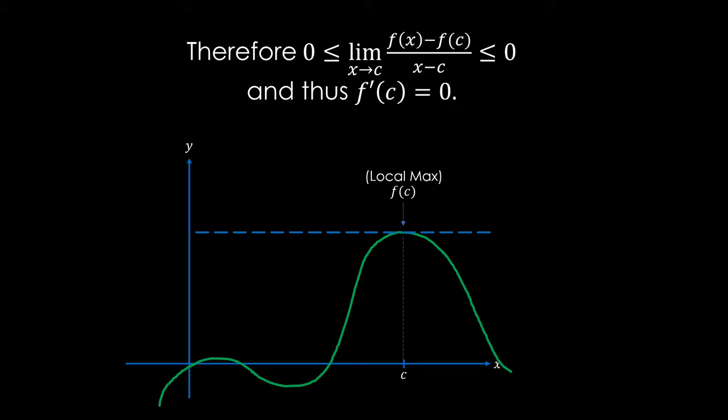You can continue your proof to prove that at a minimum point, this will also hold true, but generally you can stop your point here and say that in a similar fashion, we can prove that at a minimum value of a function, the derivative at c, which in this case would be a minimum, must also equal 0, and therefore Fermat's theorem holds.